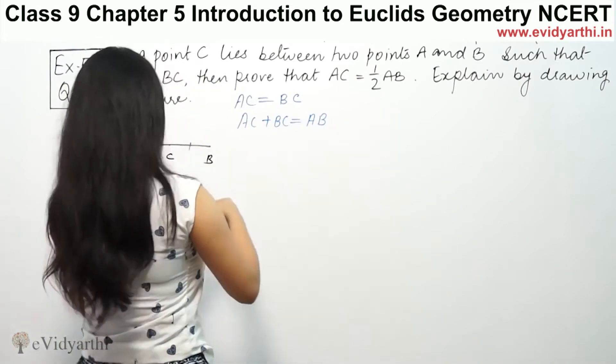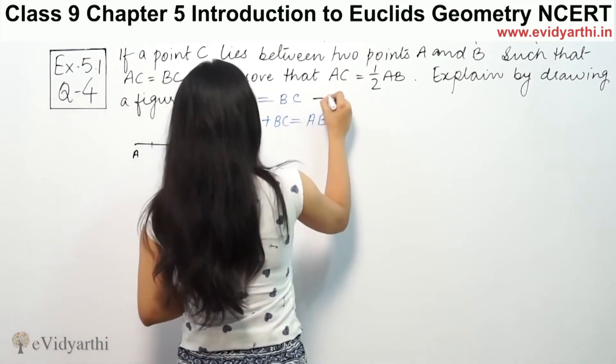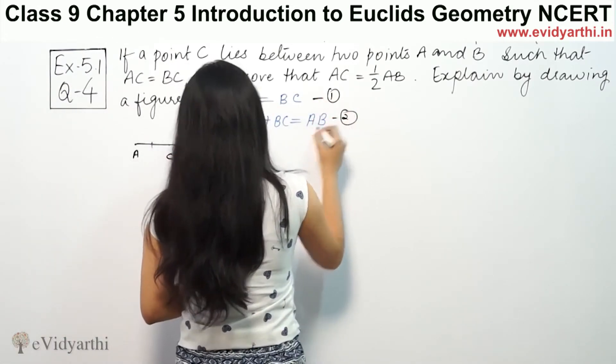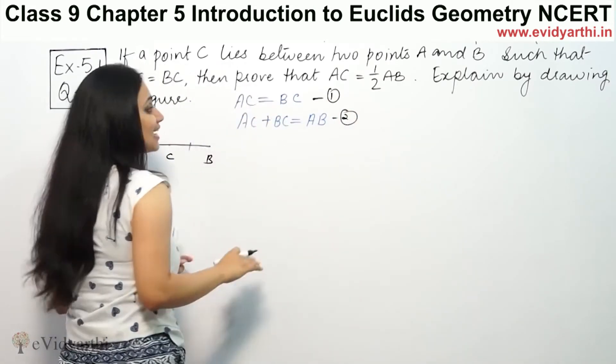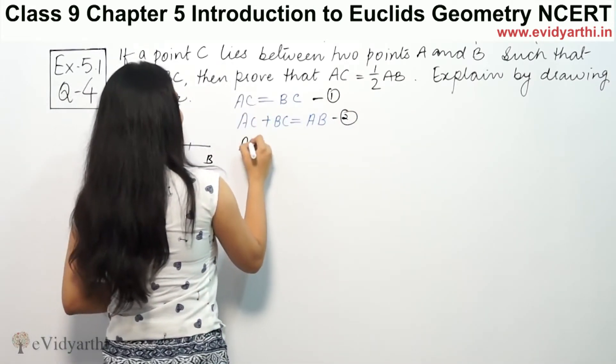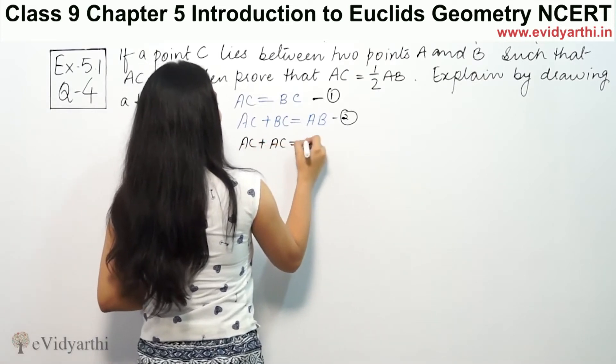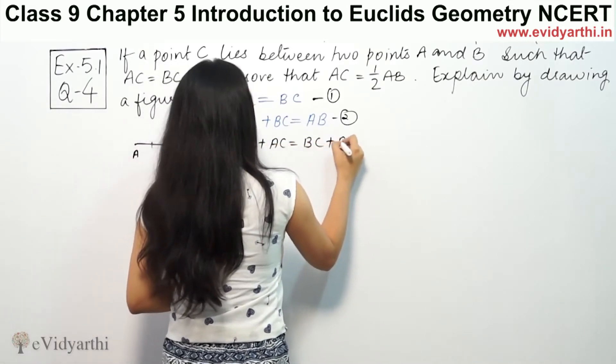Now we have this first equation. Suppose this is first, this is second. If we add AC to both sides, AC plus AC is equal to BC plus AC.